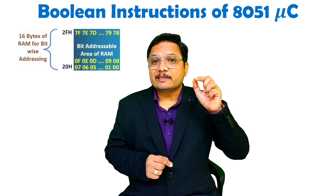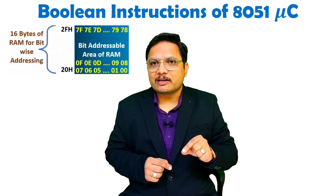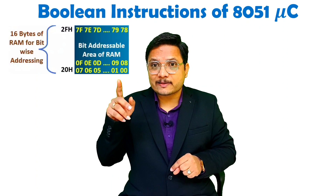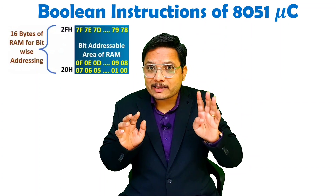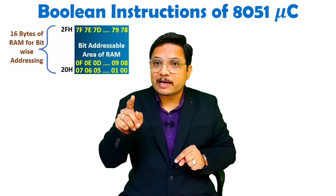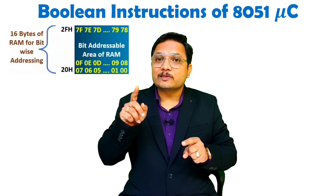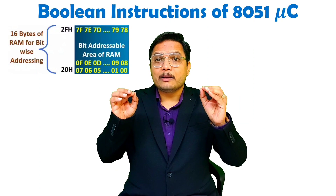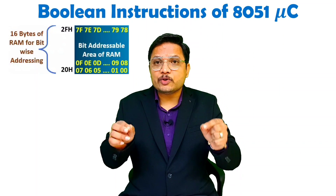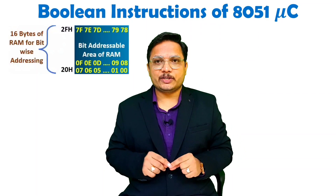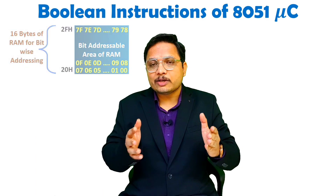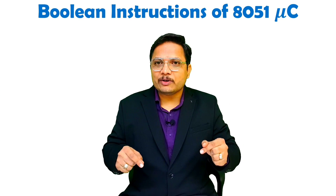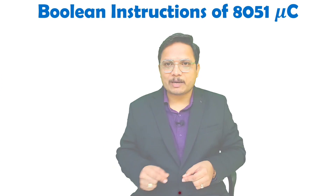Secondly, if you see the internal RAM structure, from 20h to 2Fh there are a total of 16 bytes, and all 16 bytes are bit addressable. So 16 into 8 means 128 bits are bit addressable, by which you can perform single bit operations. You need to understand all these instructions which I am going to explain in this video.